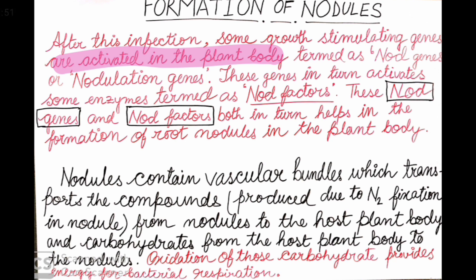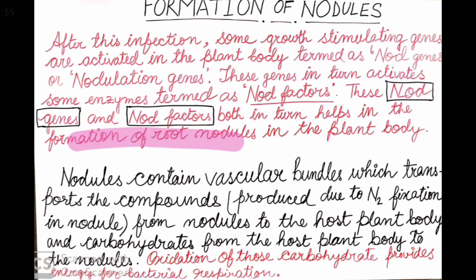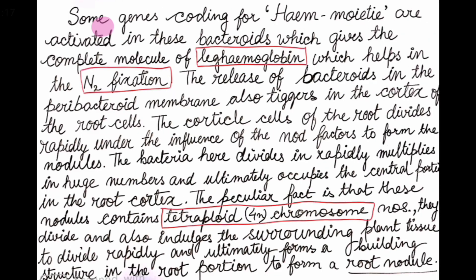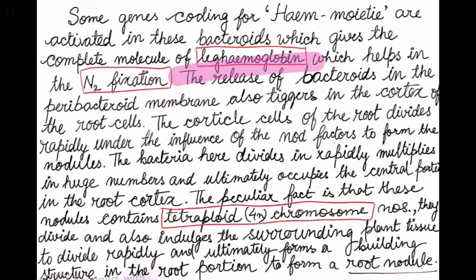The nod genes and nodulation genes activate the nod factors. These nod factors and nod genes together help in root nodule formation in the plant body. The coding for heme moiety is activated in the bacteroids. The heme moiety combines with leghemoglobin, which comes from the leguminous plant, driven by nod genes and nod factors.